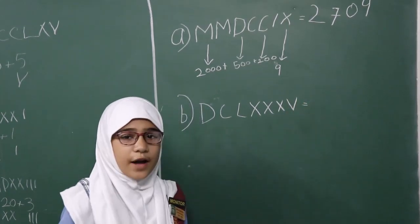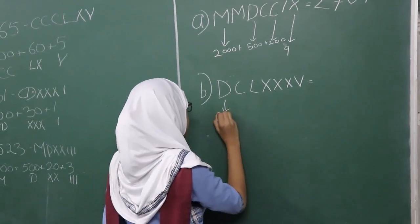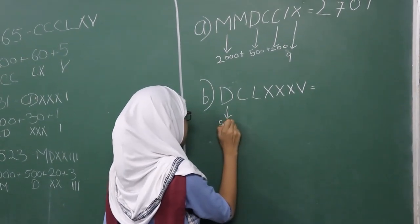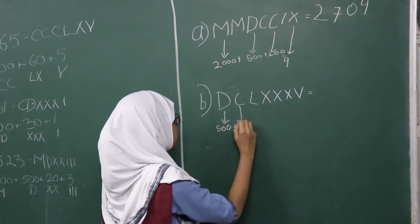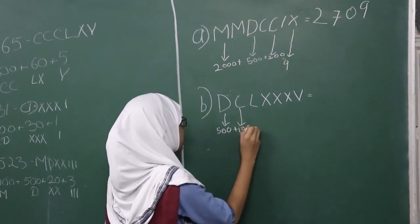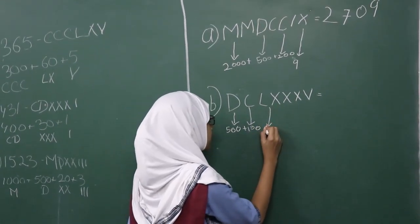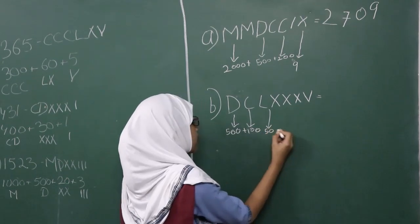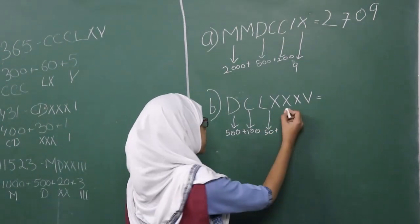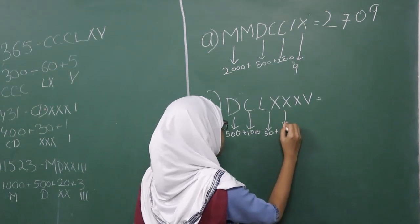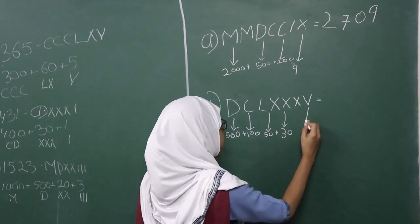D is five hundred. C is one hundred. L is fifty. And there are three X's. Then V.